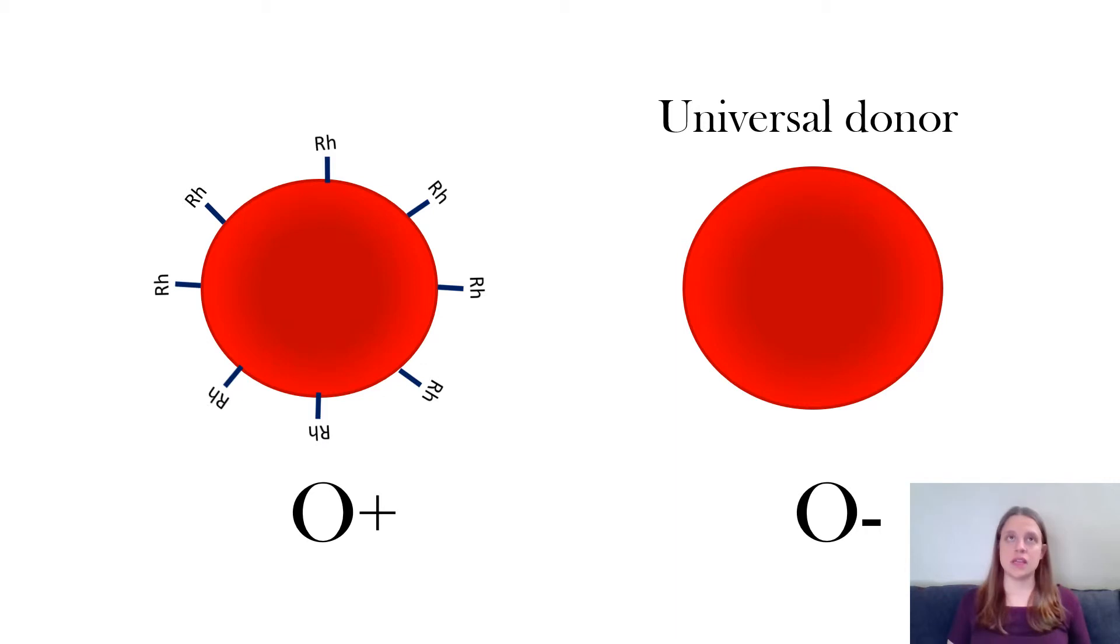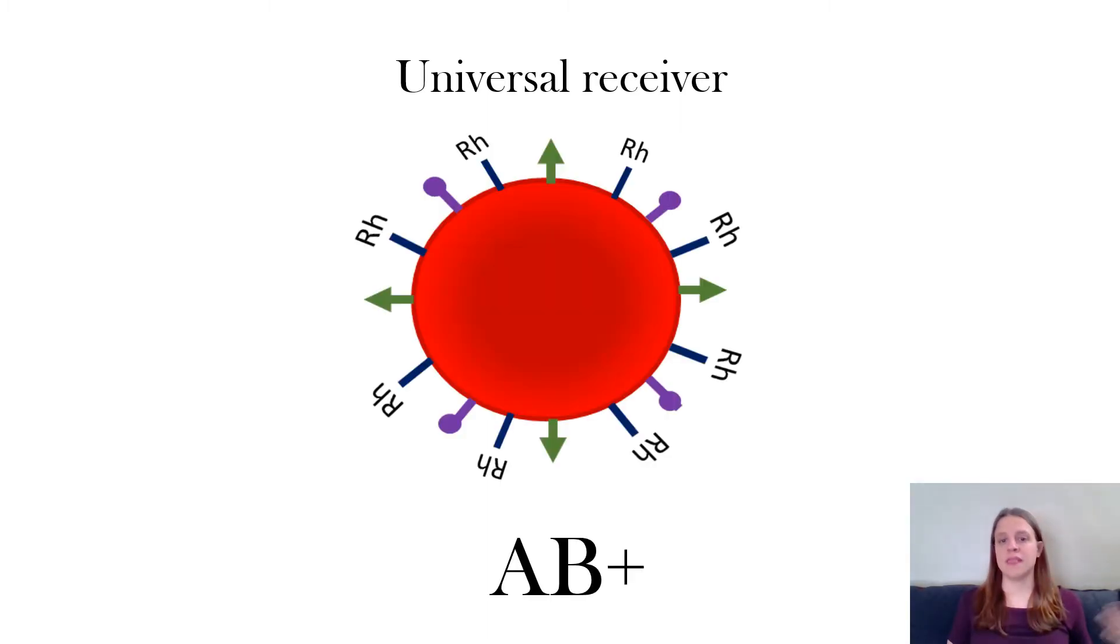O negative is the universal donor because they can give their blood to anybody and it's not going to cause an immune response because there are no antigens present to cause an immune response. So if O negative that has zero antigens is the universal donor then who's the universal receiver? AB positive. Because they have all the different types of antigens it doesn't matter what type of blood they get because no matter what their immune system will recognize the antigens as belonging to the self and therefore there won't be a reaction.